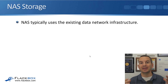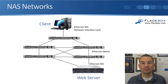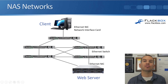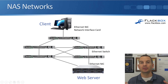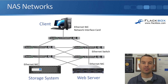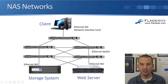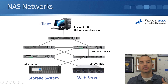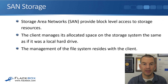NAS typically uses the existing data network infrastructure, meaning it doesn't have its own separate dedicated network. Imagine you're on your client PC at your desk — you're accessing other servers within your company, such as a web server, and also the internet over this network. The storage system is added to this existing network infrastructure, with redundant connections to two switches for resiliency. You do not need to put in a separate dedicated network. That was NAS.